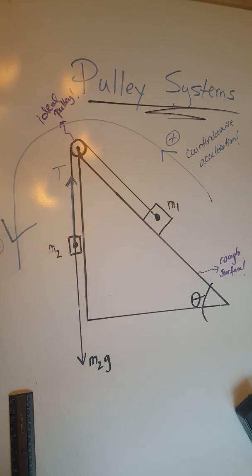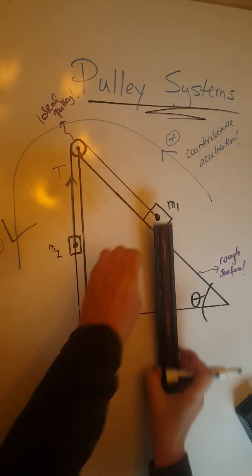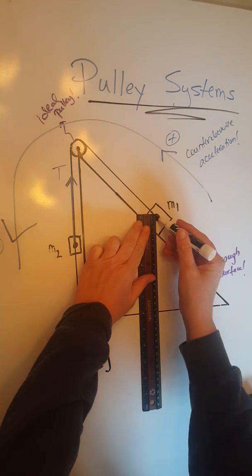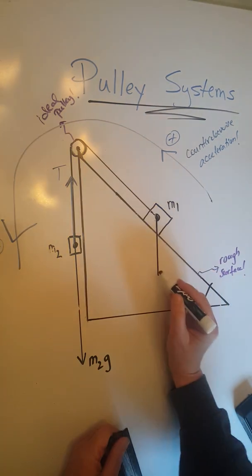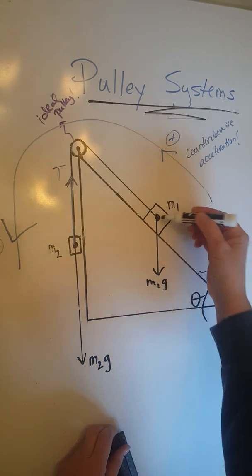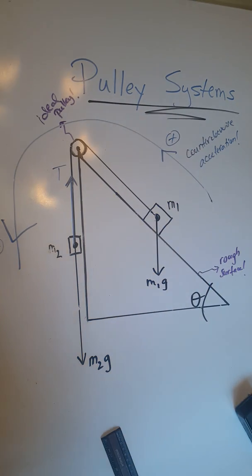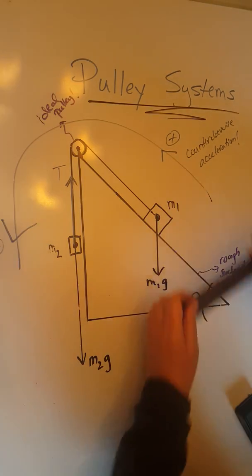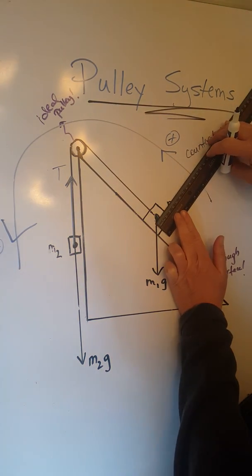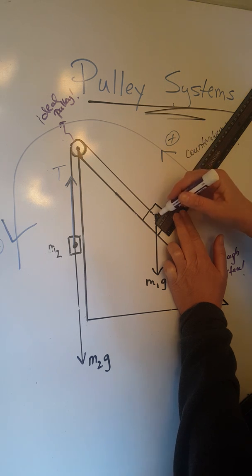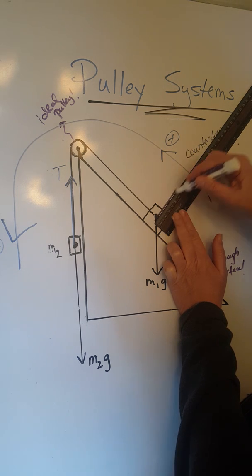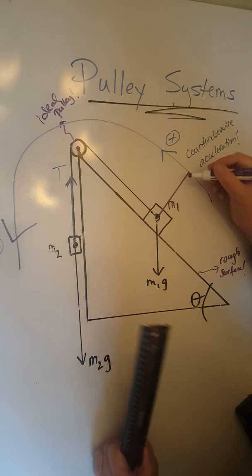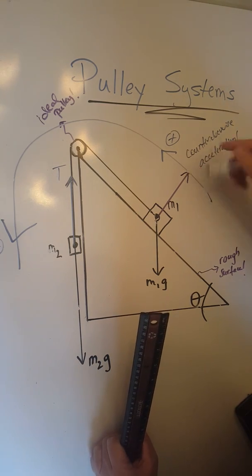For M1, we are going to have M1G vertically downwards. We are going to have a normal force perpendicular to the plane, starting from the center of gravity. Let's label that N.